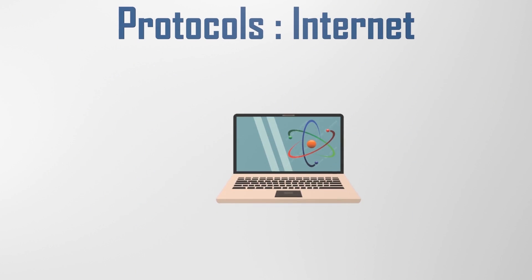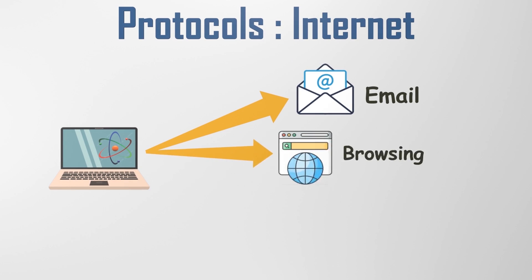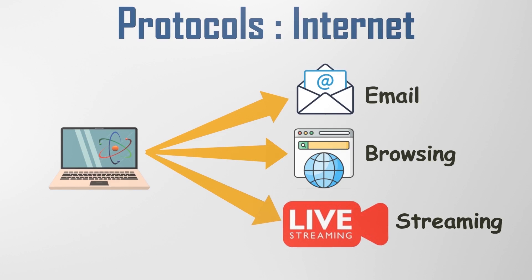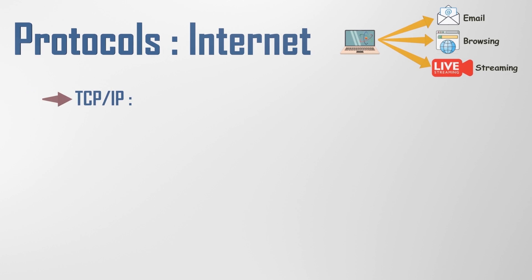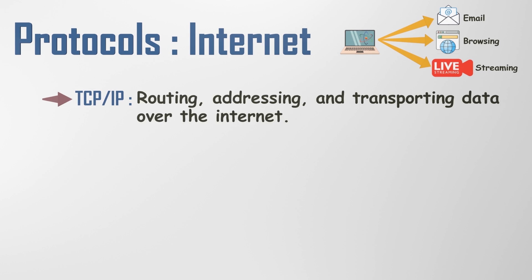Similarly, on the Internet, we employ a common protocol system to govern how data is transmitted across the network. Whether you're sending an email, browsing a website, or streaming a video, your device communicates with servers and devices worldwide using these protocols. There are many protocols that make the Internet possible. TCP/IP is the most common Internet protocol suite. It includes protocols for routing, addressing, and transporting data over the Internet. TCP/IP is used by all devices that connect to the Internet, including computers, smartphones, tablets, and routers.